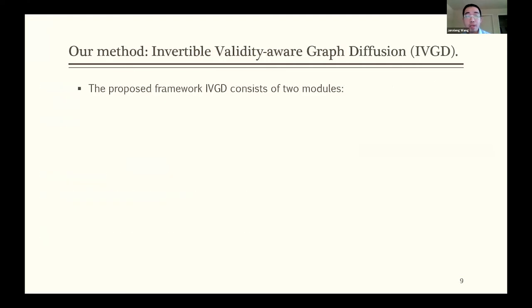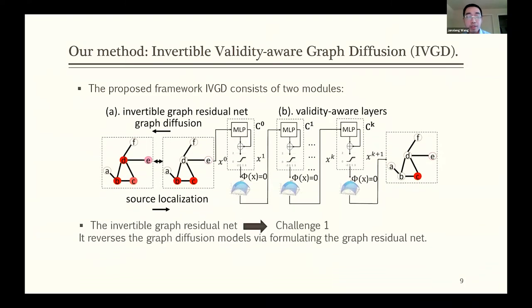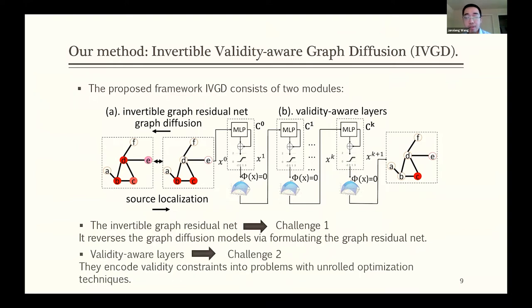Now let's move to our framework part. We propose an IVGD model for source localization, which stands for Invertible Validity-Aware Graph Diffusion. Our proposed IVGD framework consists of two modules. The first module is the invertible graph residual net, which reverses the graph diffusion model by formulating the graph residual net. Then we design some validity-aware layers which satisfy the validity constraint. Such layers encode validity constraints into the problem by unrolled optimization techniques.